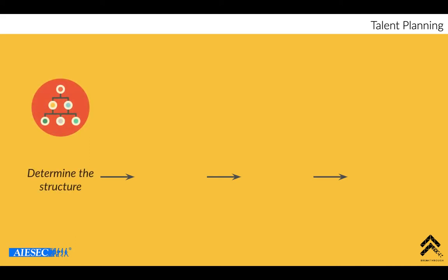So if you look at the first step of why talent planning — first is to make sure that you have a very clear structure. Determining structure is one of the ways we can ensure that our operation runs smoothly. Without a structure, most of the time people wouldn't know their role, people wouldn't understand their JD, and at the same time your structure should be able to support your strategy's implementation based on the goals that you have set.